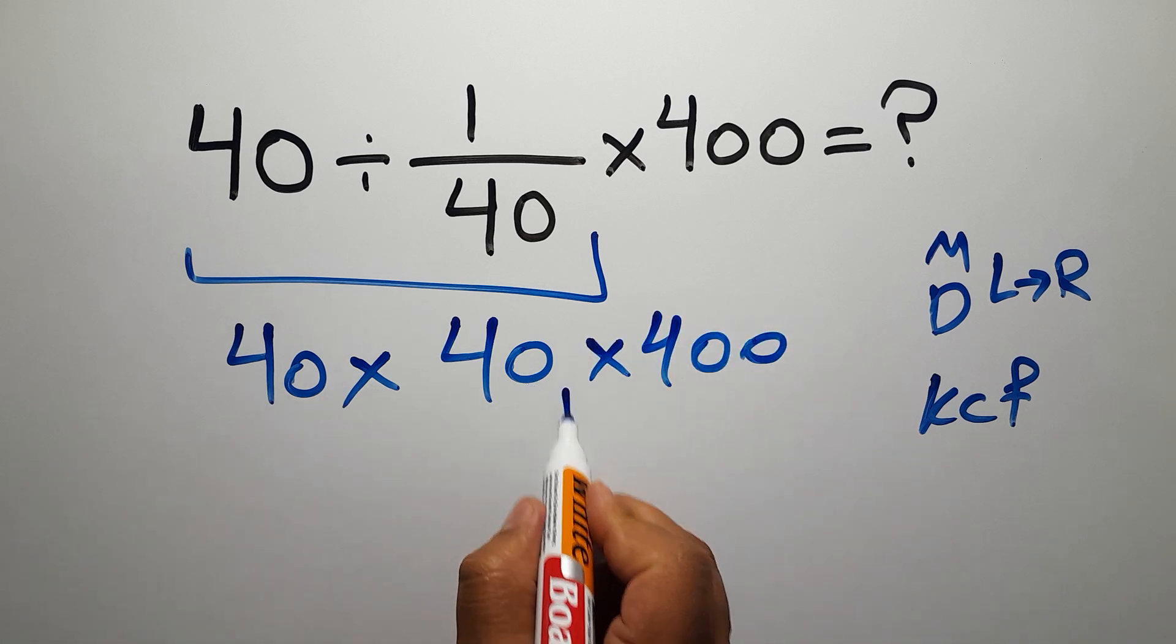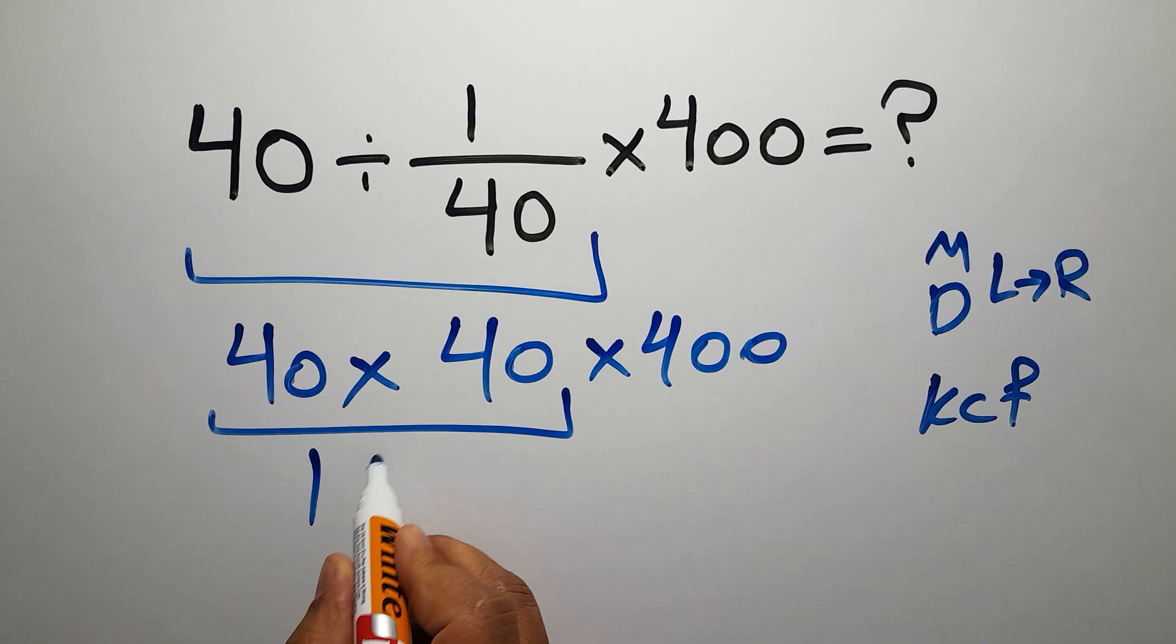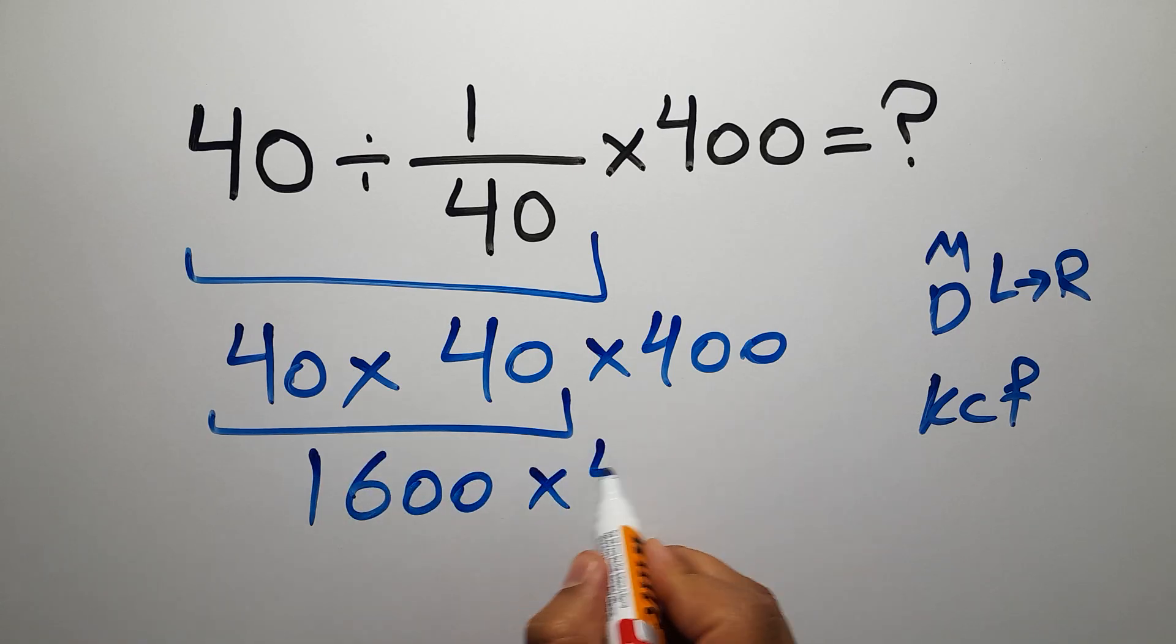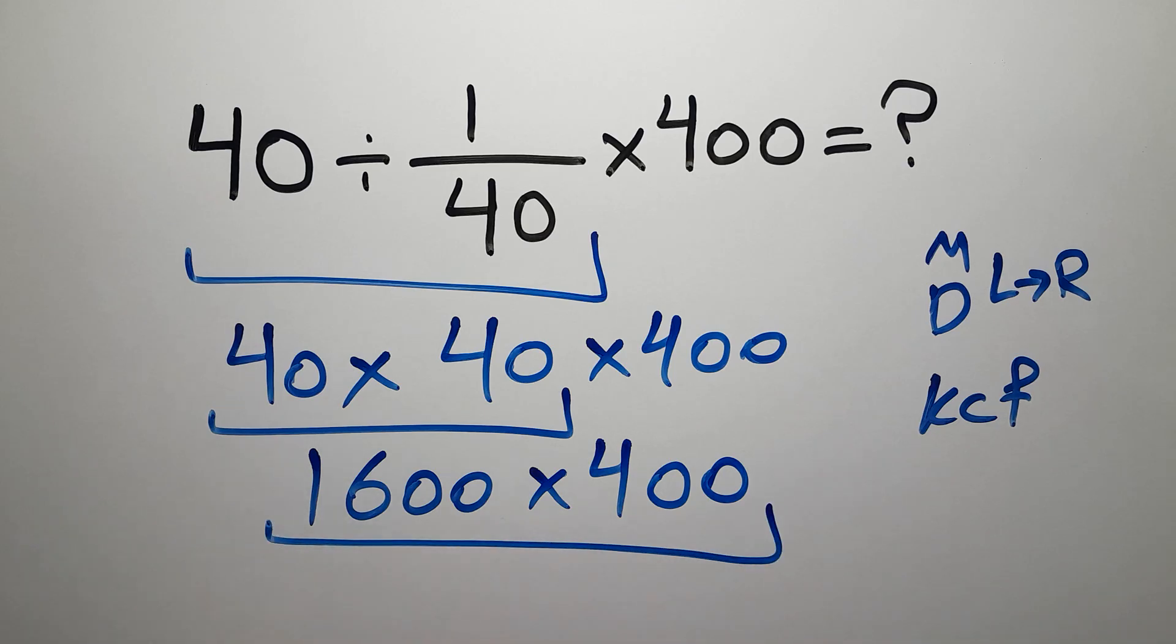Now 40 times 40 gives us 1600, then times 400, and this is equal to 640,000. 4 times 16 gives us 64, and we have four zeros.